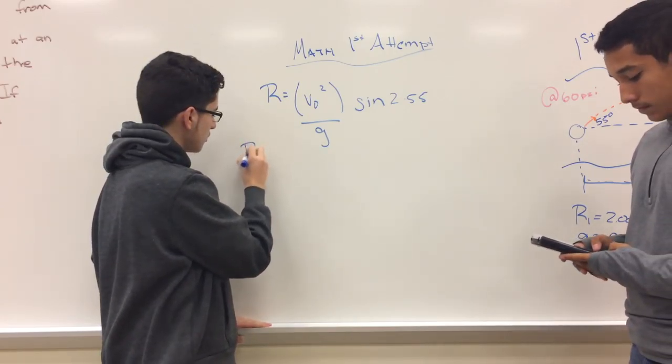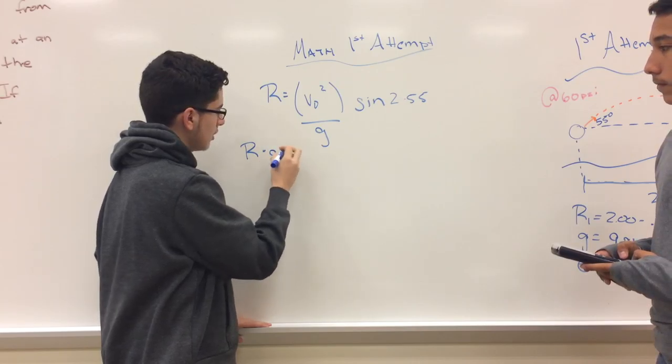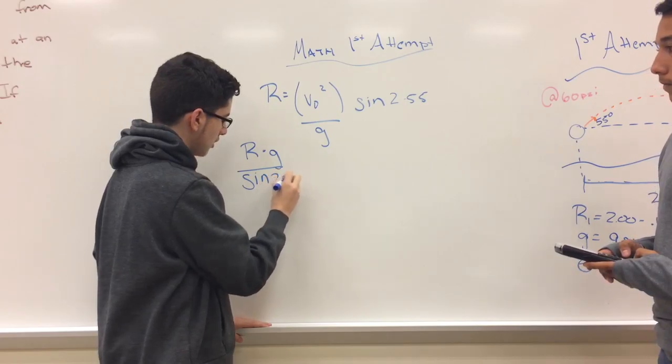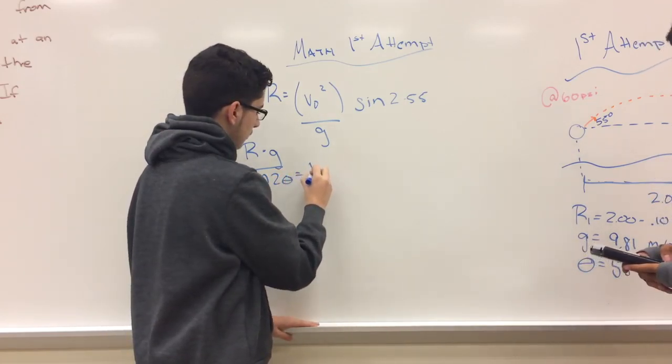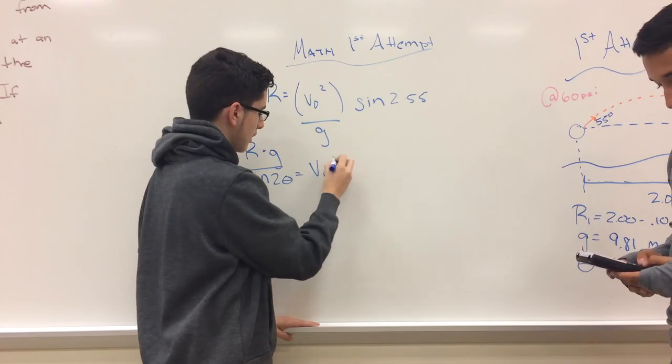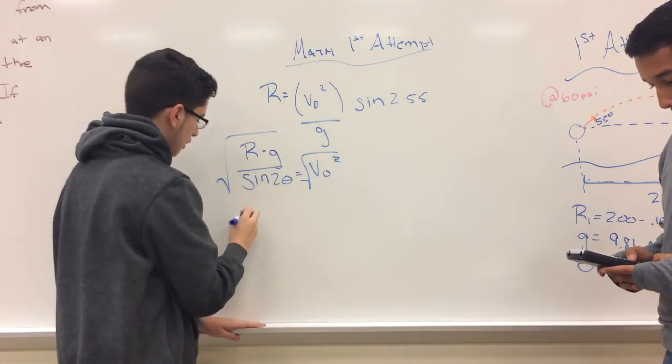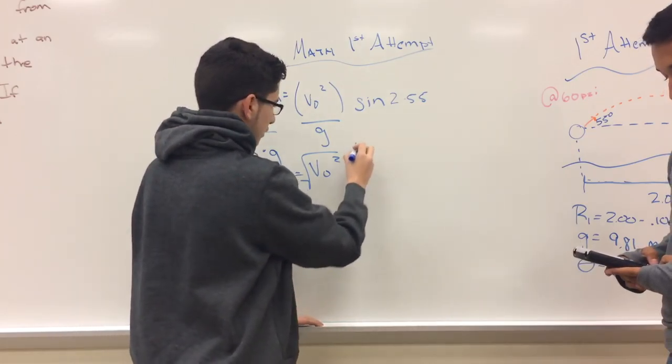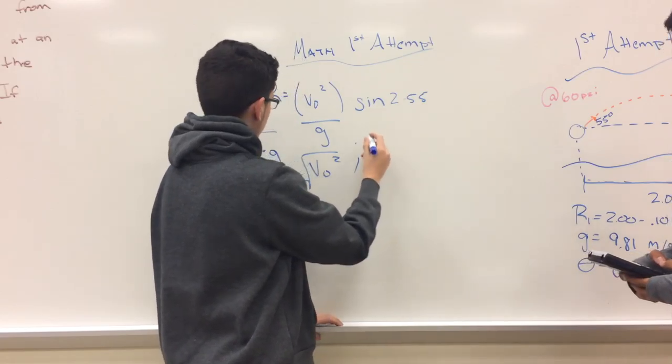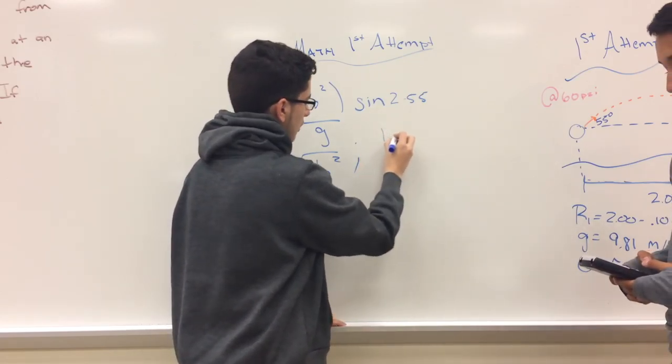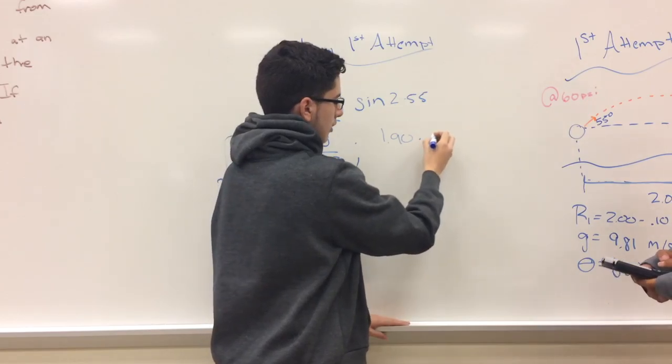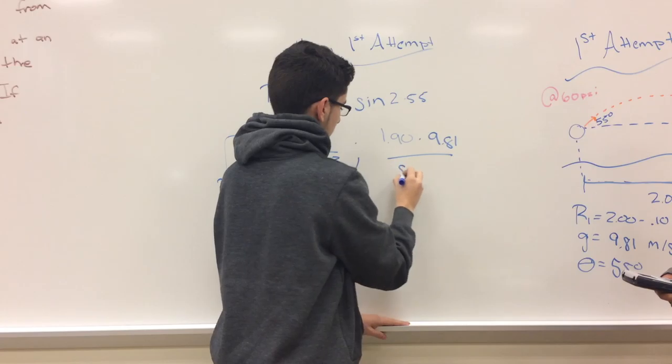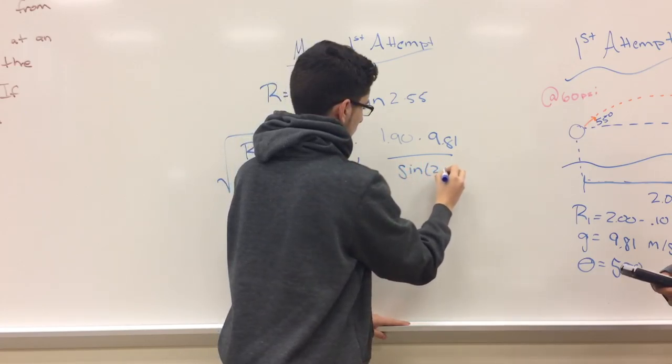So it would be the range times gravity divided by sine two theta would give you v-naught squared. And then you would square root both sides to get your v-naught value. So in this particular example, the range would be 1.9 times 9.81 all over sine of two times 55 degrees.